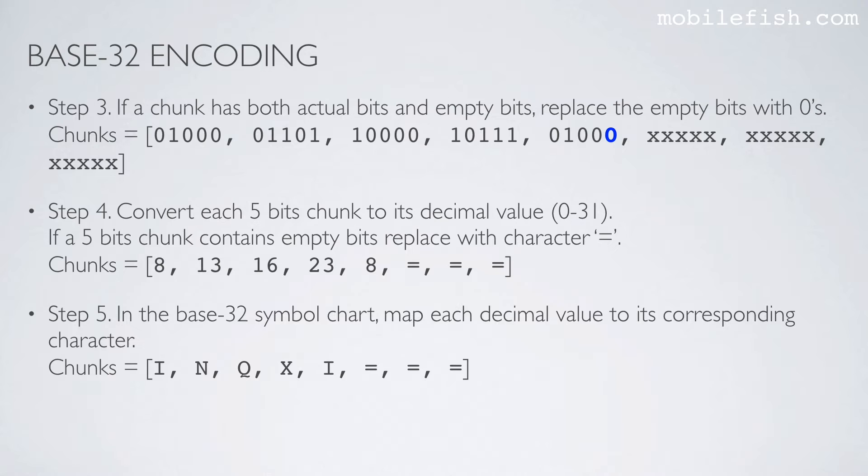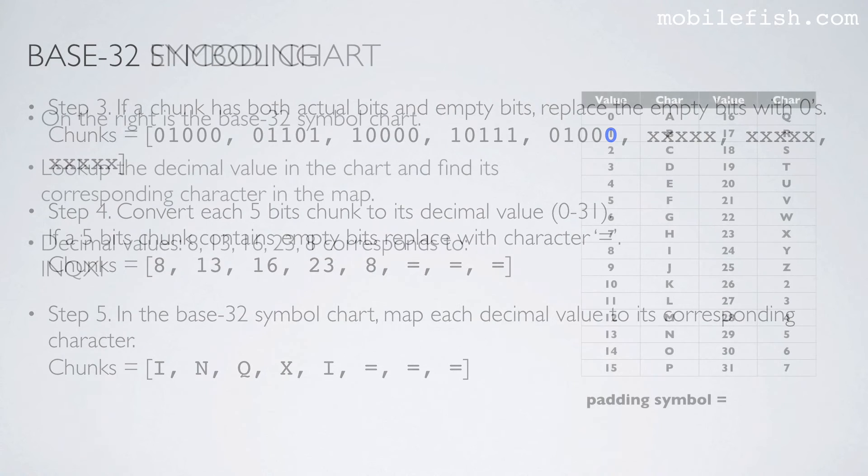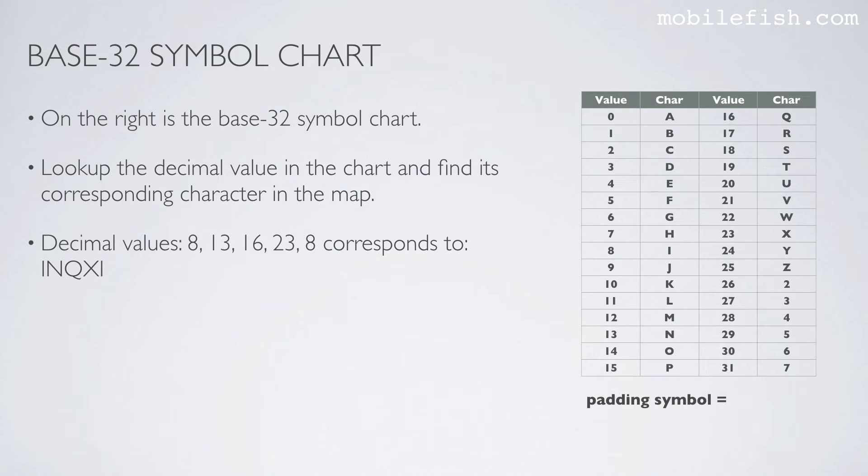Step 5: In a base32 symbol chart, map each decimal value to its corresponding character. On the right is the base32 symbol chart. Look up the decimal value in the chart and find its corresponding character in the map.